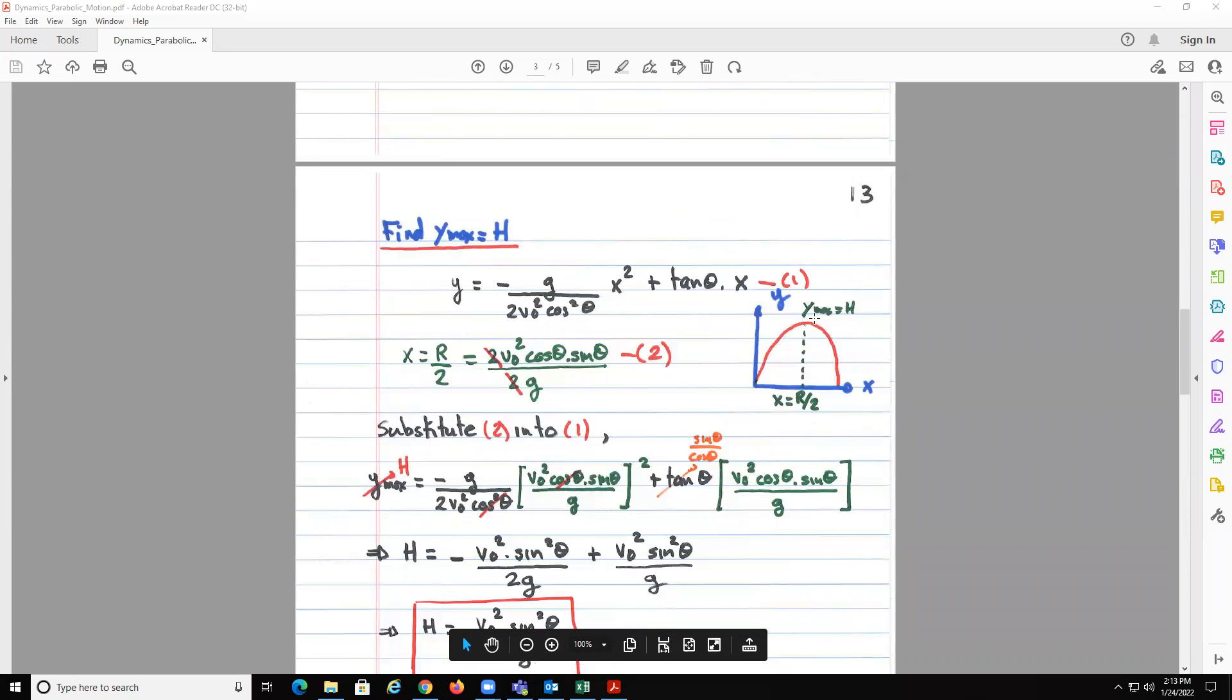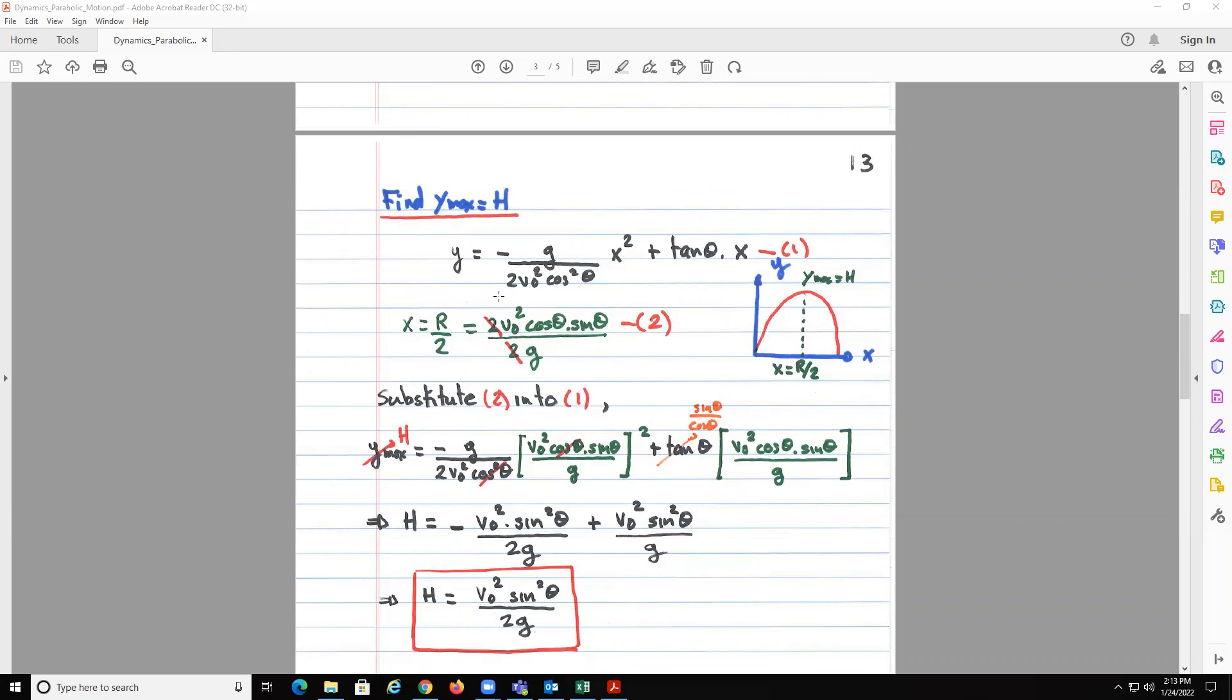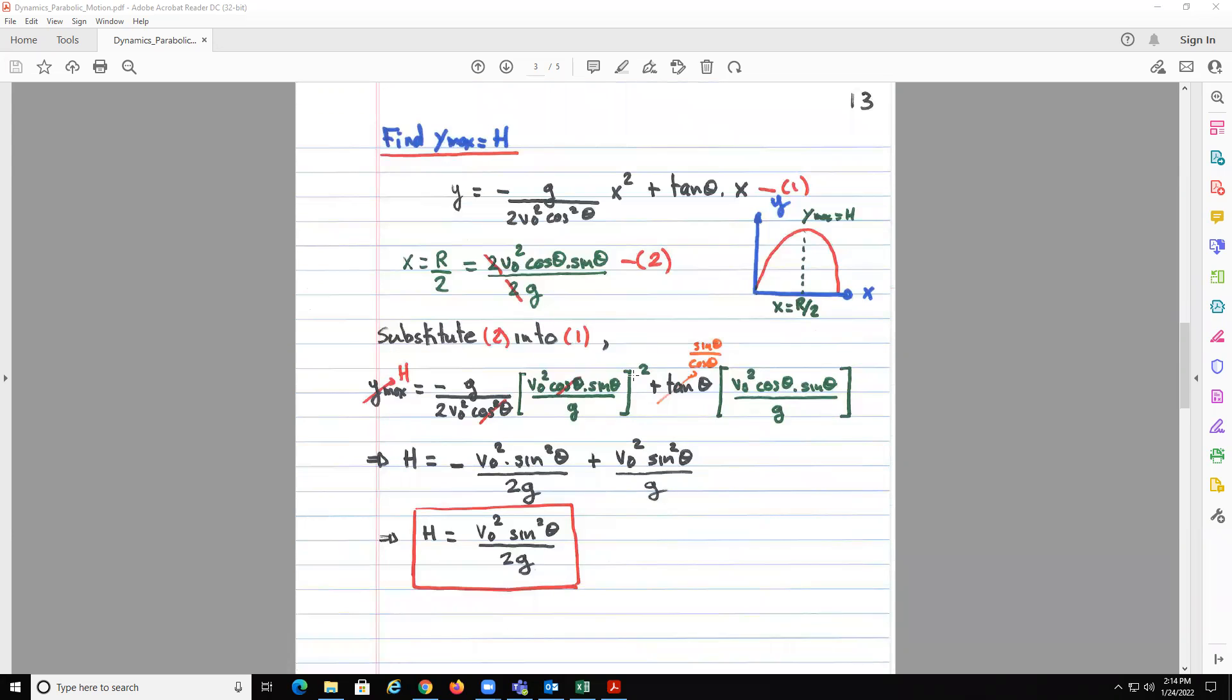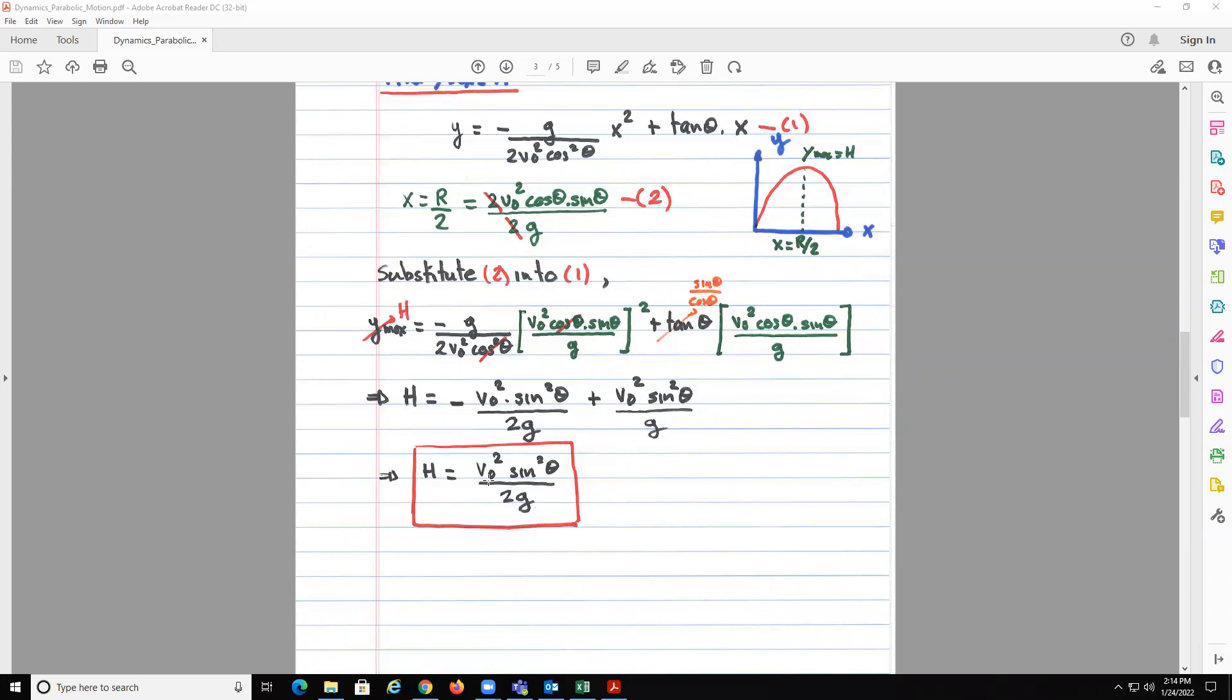Next thing we need to find is maximum y, so we said before that the maximum y will happen at the x, which is half the maximum range. So the only thing we do is that we take half the maximum range, so this will be this expression, and we're going to substitute this x into here, and this should give us the maximum y, which in this case we call h. So you see this term is in green. If you go through the algebra, you end up with minus one half, basically plus one of this term here, v naught squared sine squared theta over 2g, so basically the maximum height is equal to v naught squared sine squared theta divided by 2g.